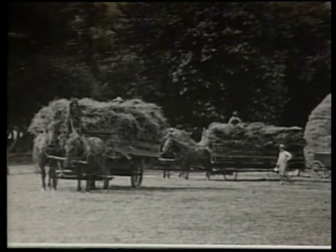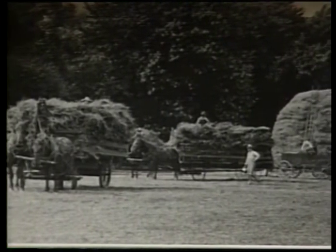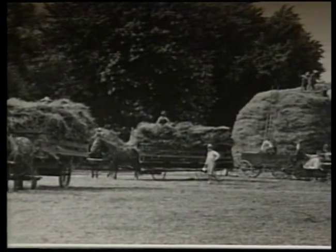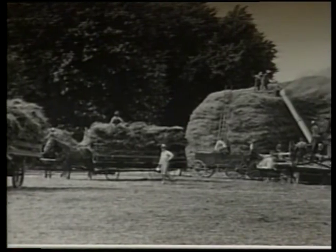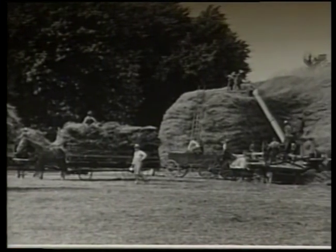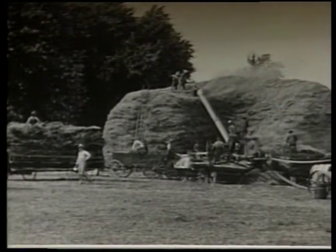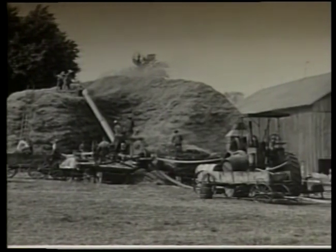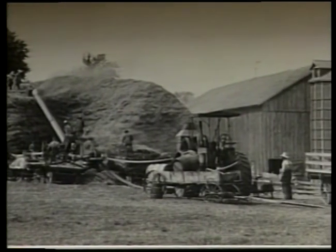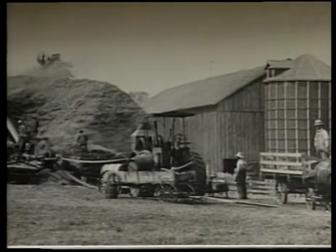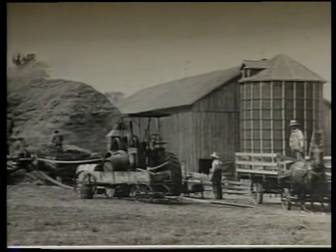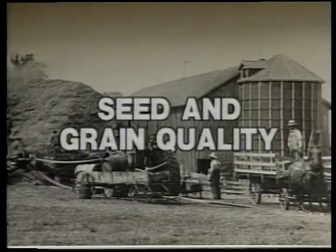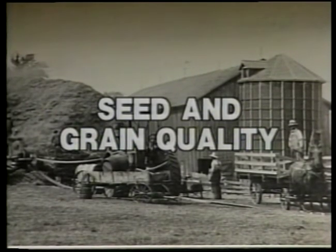Seed and grain quality are important goals that affect many aspects of agriculture, from production and storage, to marketing and transportation, and to processing and use. Producing and maintaining high quality are critical components to a sound agricultural system. This is the end of the chapter on seed and grain quality. You should now be ready to try the self-evaluation test at the end of the chapter in your text.